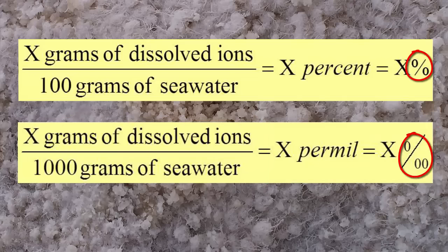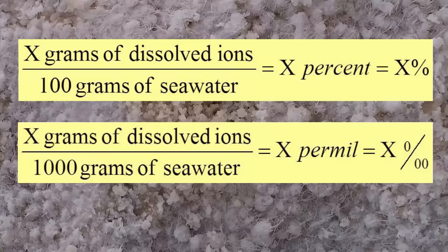Notice the unit designation for per mil looks very similar to the one for percent. It just has two zeros in the base instead of one. Note, mil here does not mean million, it means thousand, like in the SI system of units.